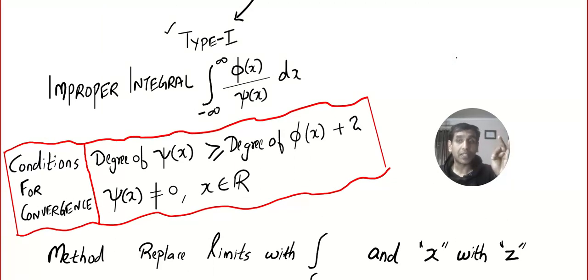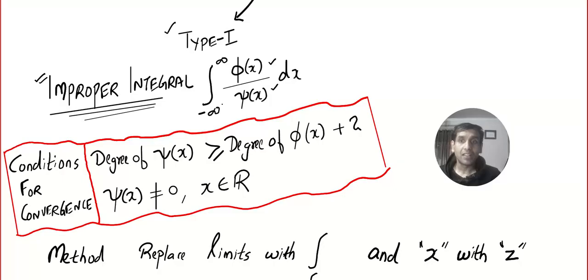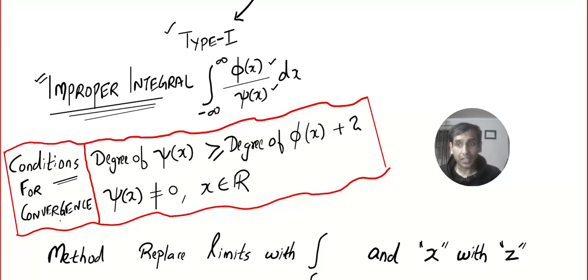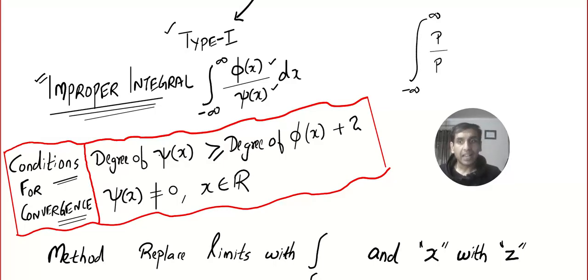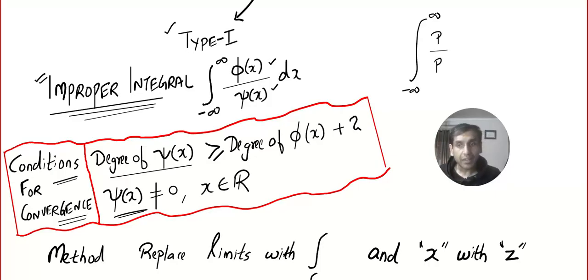Let's move on to Type 1. We're going to learn Type 1, Type 2, and Type 3. In Type 1 we are going to learn how to evaluate the improper integral of polynomial divided by polynomial, where the limits are from minus infinity to infinity. You cannot solve just any problem with this method — there are a few conditions for convergence. Condition 1: the limit should be minus infinity to infinity, it should be polynomial divided by polynomial, and the degree of the denominator should be at least 2 more than the numerator.